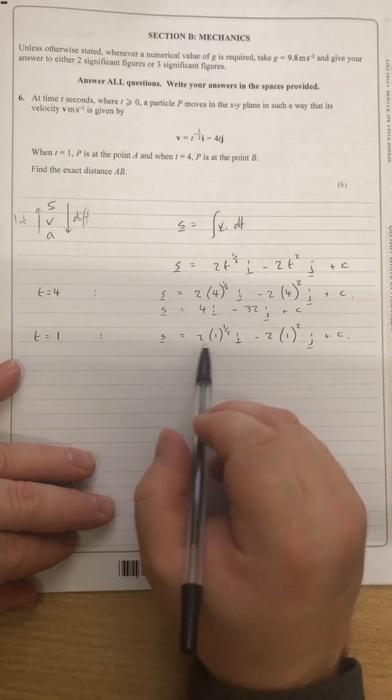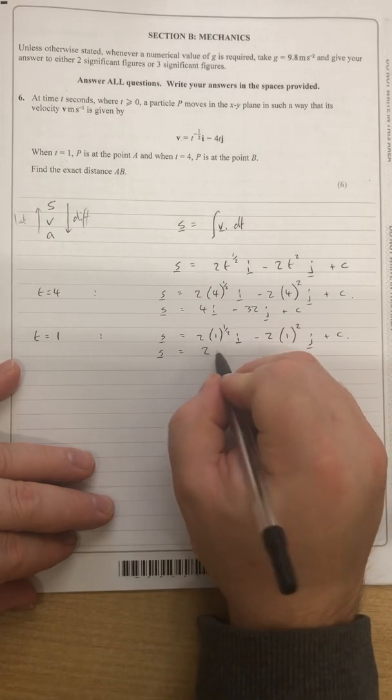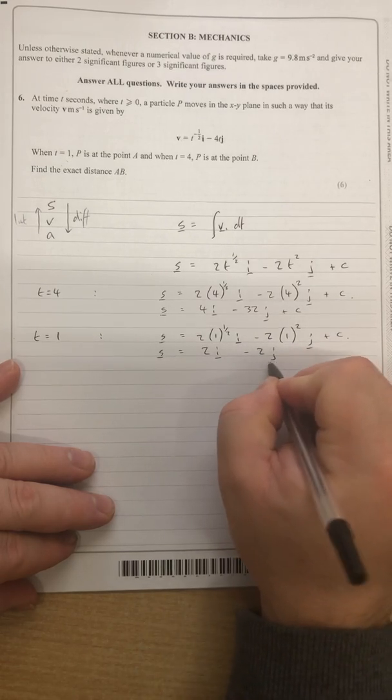And simplifying would give me square root 1 is 1, so I've still got 2i. 1 squared is also 1, so I've got minus 2j there.